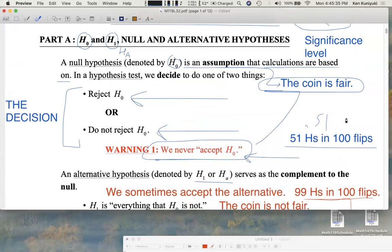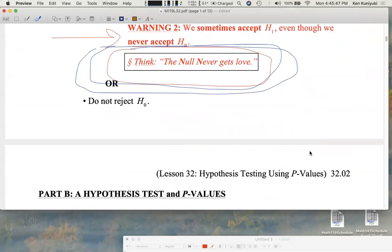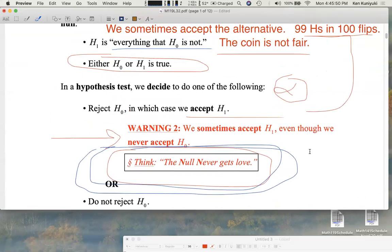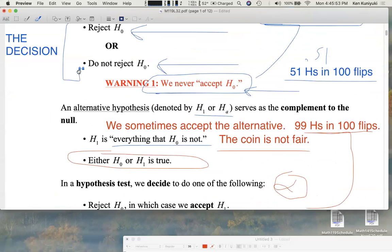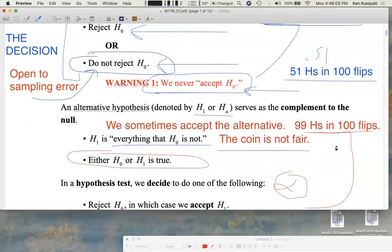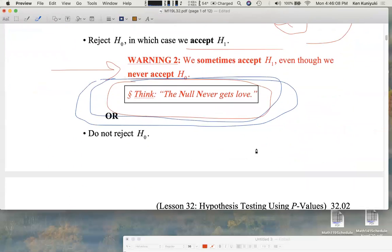Because we're a bit too skittish. Even if the coin came up heads 50 times out of 100, we're still a bit skittish about saying that the coin is fair. Because what we're saying is just that we might be open to sampling error. When we're not rejecting the null, we're just saying that we're open to sampling error. When we don't reject the null, all we're saying is that we're open to sampling error. The null never gets love. We never accept the null. So we either reject the null or we do not reject the null. We never accept the null. The null never gets love.